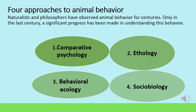To study animal behavior there are different kinds of approaches. The most acceptable are four. These four approaches have evolved over time — naturalists and philosophers have been observing animal behavior for centuries, but only in the recent past has significant progress been made. The four major approaches are: number one, comparative psychology; number two, ethology; number three, behavioral ecology; and number four, sociobiology.